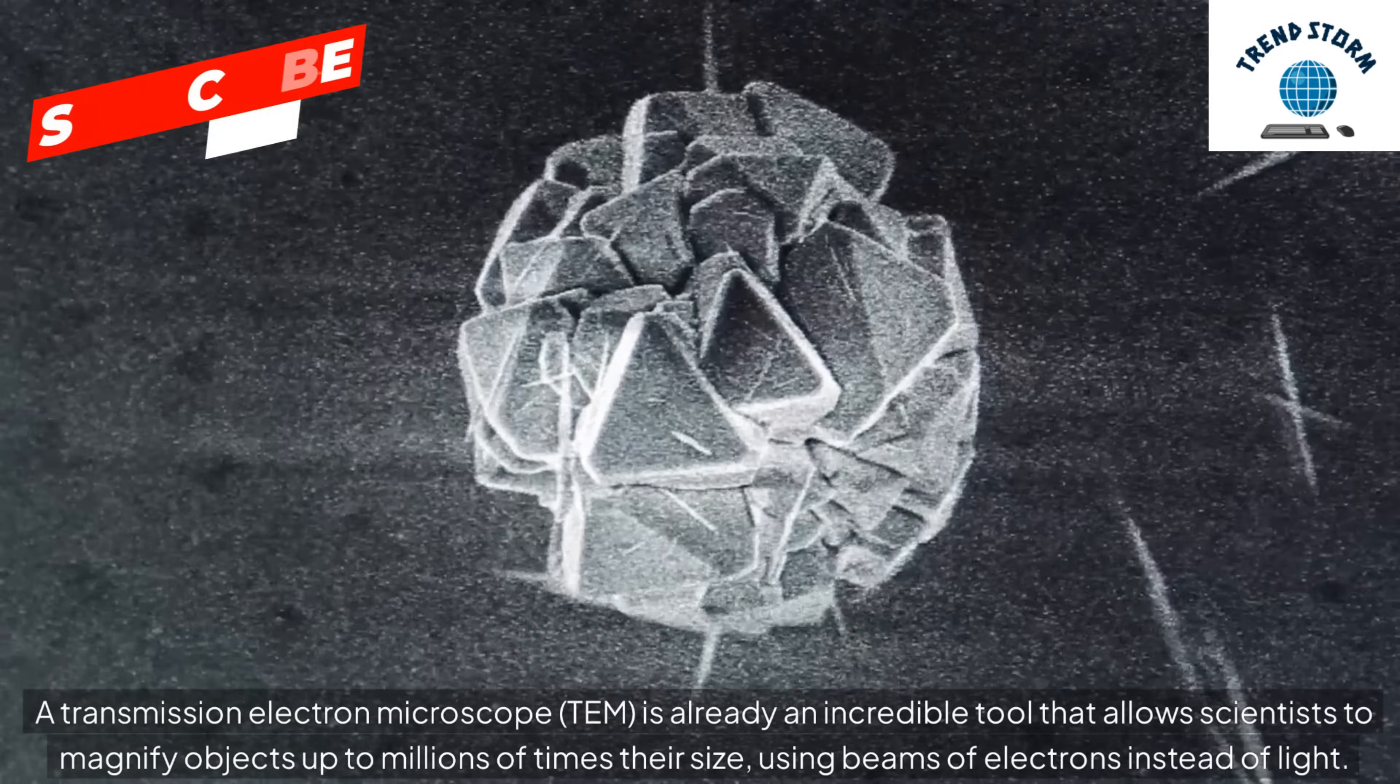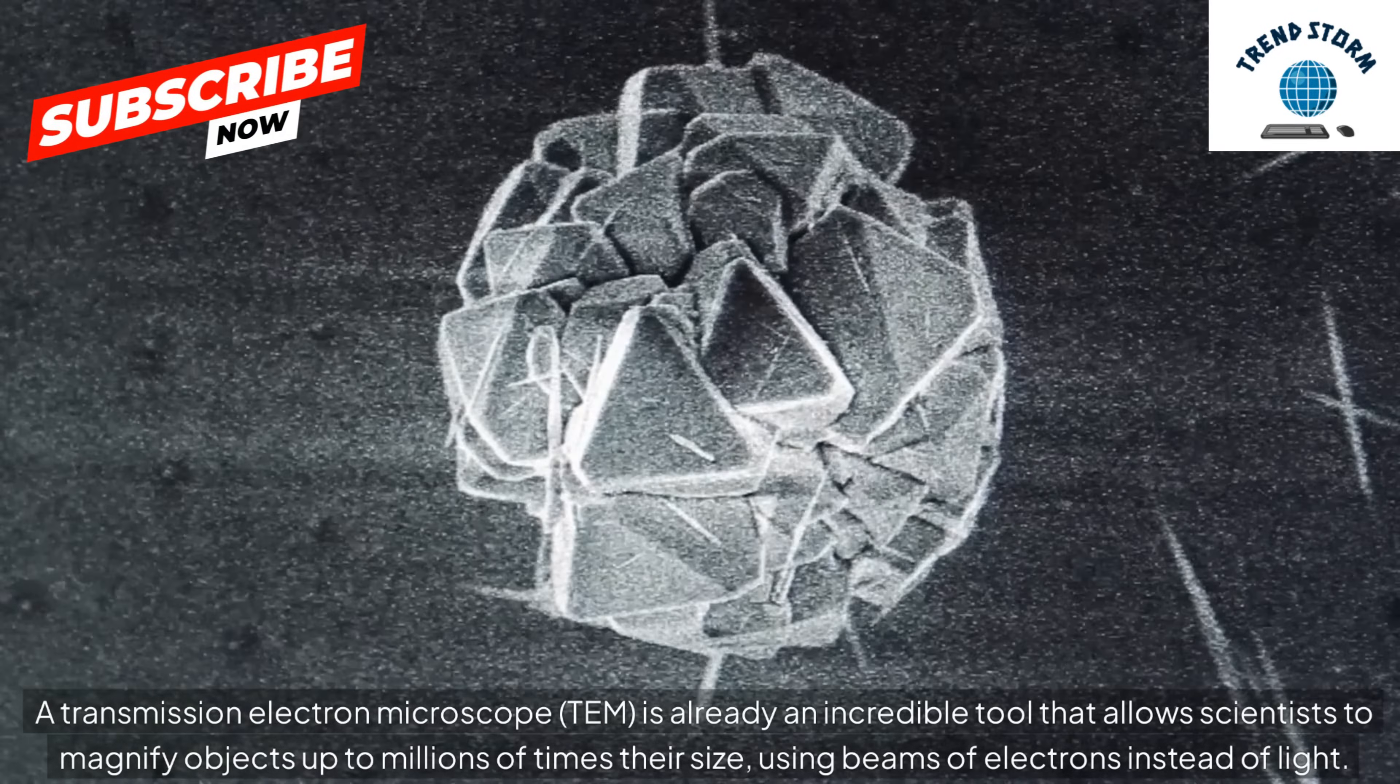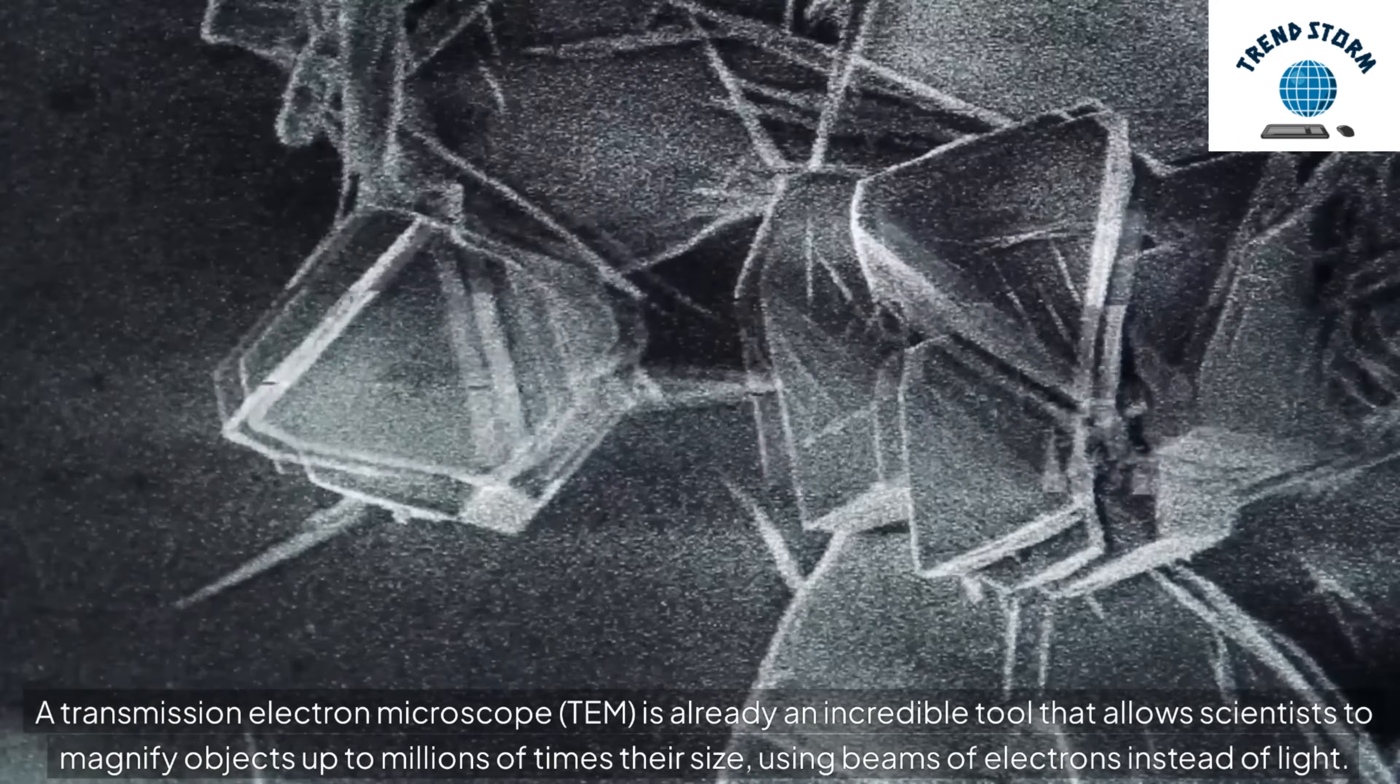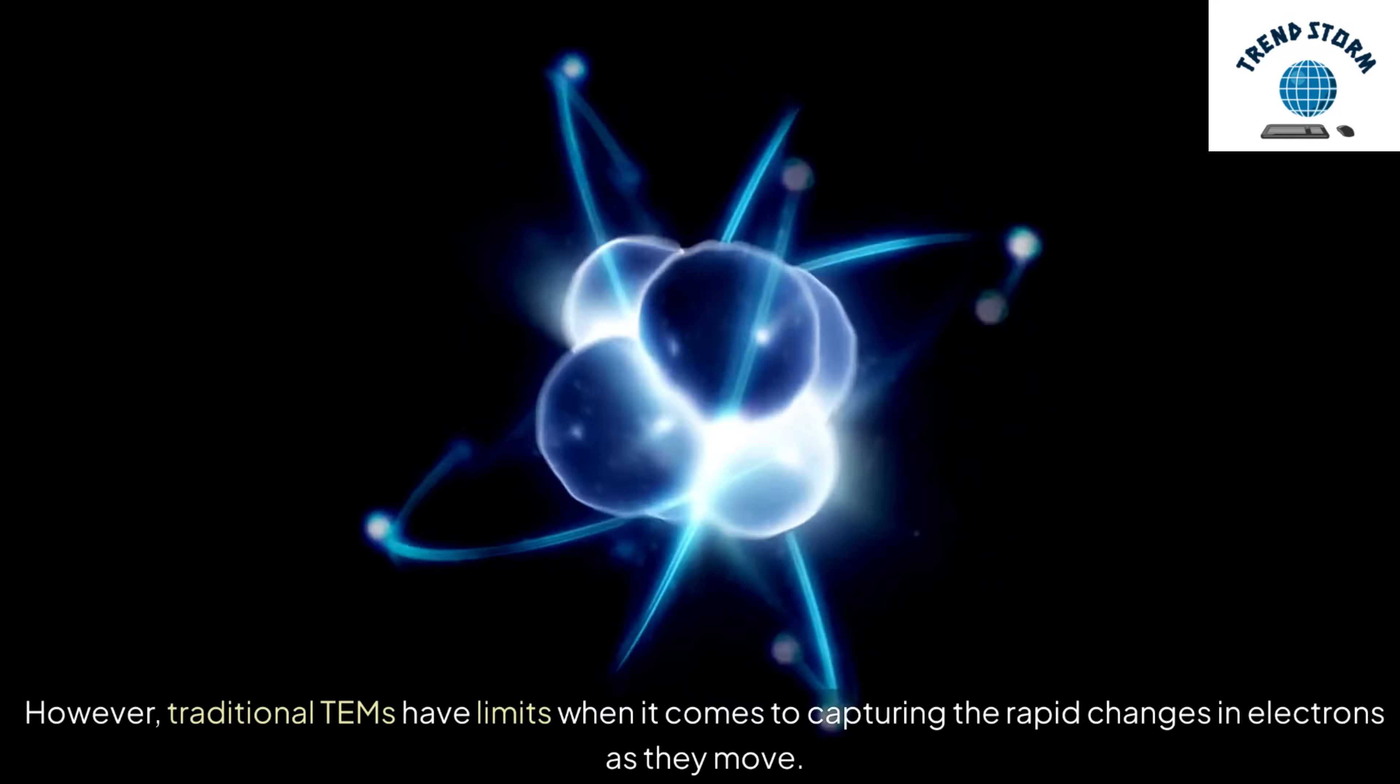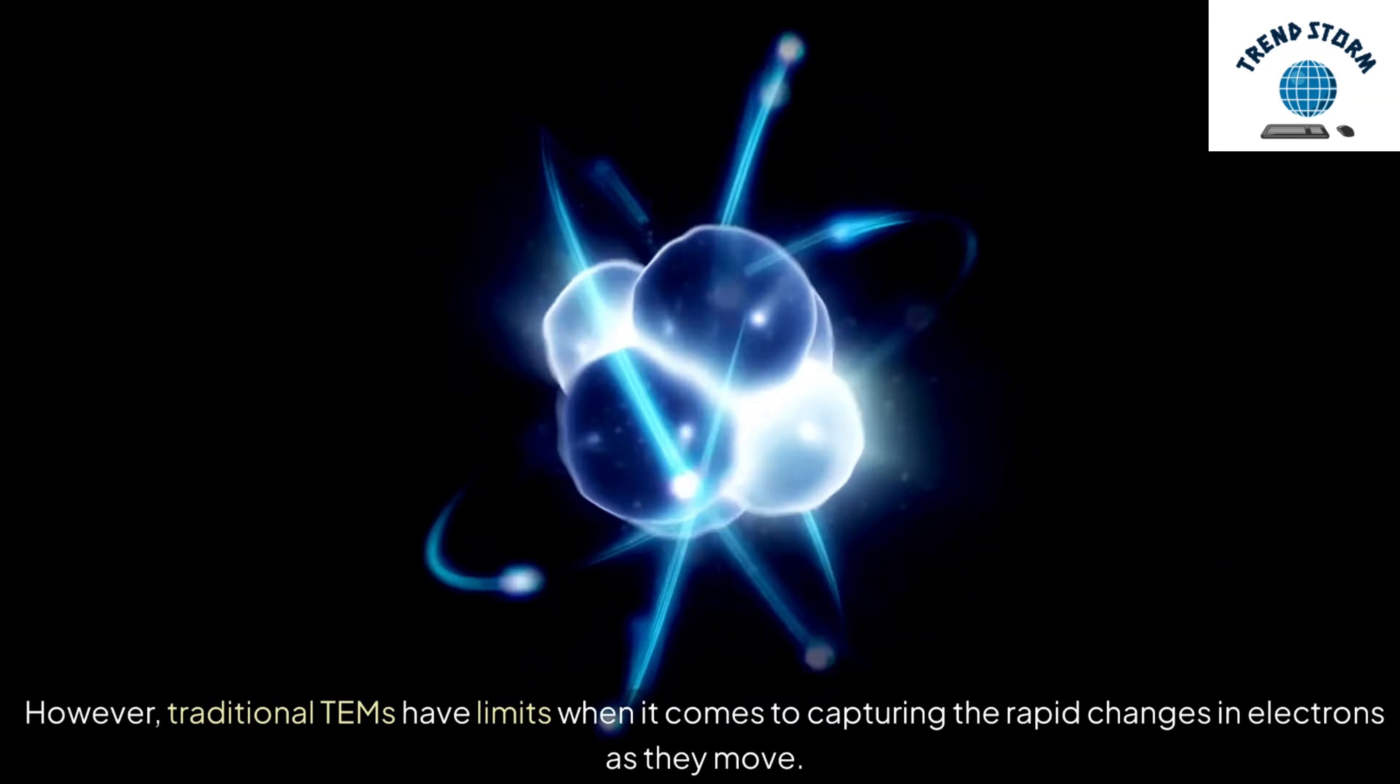A transmission electron microscope, or TEM, is already an incredible tool that allows scientists to magnify objects up to millions of times their size using beams of electrons instead of light. However, traditional TEMs have limits when it comes to capturing the rapid changes in electrons as they move.